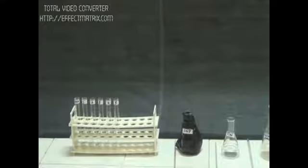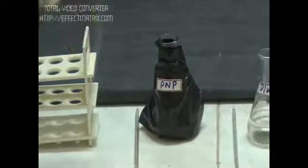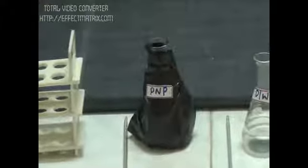We are going to perform the practical to prepare the standard graph. We have to use PNP, para-nitrophenol, which is a light-sensitive reagent, so we have kept it wrapped in black paper. Then we will use distilled water, acetate buffer, and 0.1 N NaOH solution.